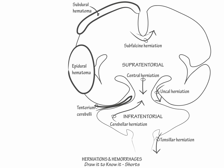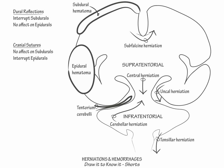Finally, to further help us distinguish these hematoma types, indicate that dural reflections and cranial sutures have different effects on them. Dural reflections interrupt subdural hematomas but do not affect epidural hematomas, whereas cranial sutures do not affect subdural hematomas but do interrupt epidural hematomas. This concludes our diagram.